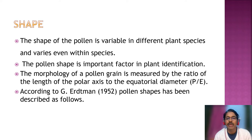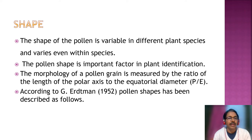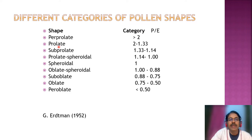This shape is defined by the ratio of the length of the polar axis and equatorial axis. The polar axis is the distance between the proximal pole and distal pole, and the equatorial diameter is the diameter of the equatorial plane. According to Erdtman 1952, pollen shapes have been described as follows according to the ratio of polar axis to equatorial axis: per prolate where the ratio is greater than 2, prolate where the ratio ranges from 2 to 1.33, and sub-prolate 1.33 to 1.14.